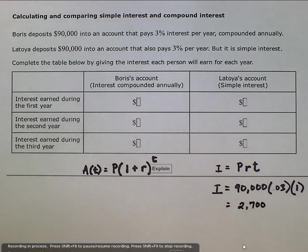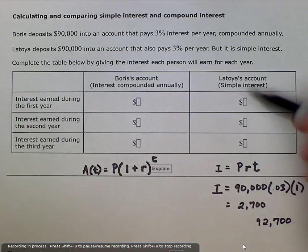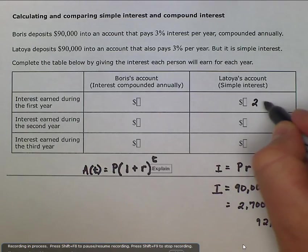So 2,700 is going to be the amount that she earns after one year of interest. Now the problem with simple interest is the next year, we don't take into consideration the new amount she has in her account. Because the new amount, if we add it to the principal, is going to be 92,700. That's how much she'll have in her account. The interest is always going to be on the amount deposited. So we can go ahead and fill in that she's going to earn $2,700 each year.